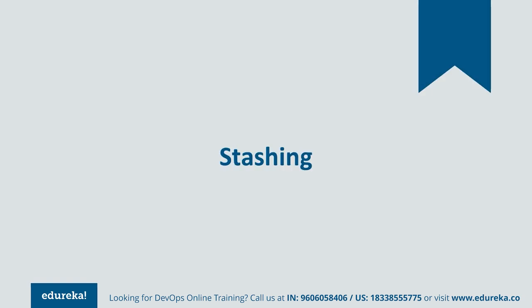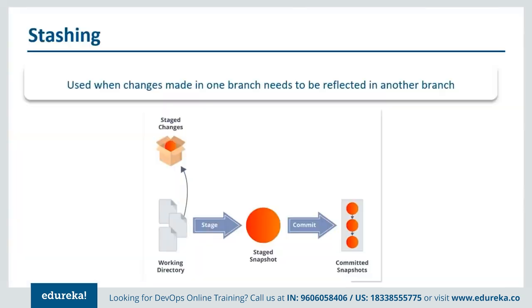Let's move on to another important operation: stashing. Git stashing is a way of creating a checkpoint for non-committed changes. It saves all changes to a temporary location so the user can perform other tasks such as switching branches, reverting, etc. These changes can be reapplied anywhere. The temporary location saves all uncommitted changes, and whenever the user wants those changes, they can just apply them anywhere.